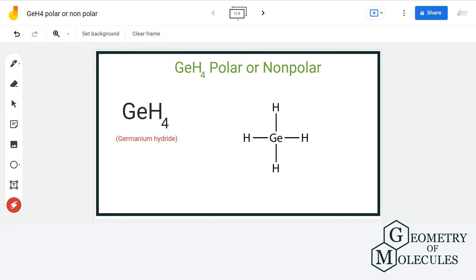Hello guys, welcome back to our channel. In this video we are going to help you determine the polarity of GeH4 molecule. It's the chemical formula of germanium hydride. To understand its polarity, we will first look at its Lewis structure followed by its molecular structure.